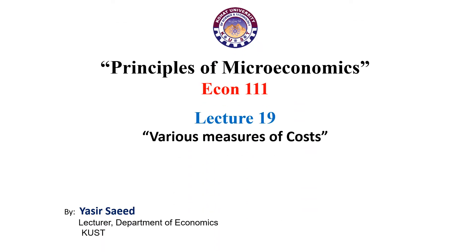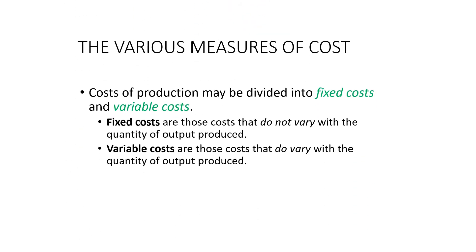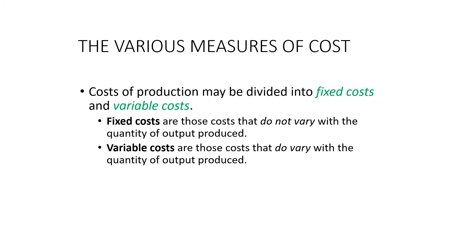Hello everyone and welcome to the class of principles of microeconomics, ECON 111. This is lecture number 19. In this lecture we are going to study the various measures of cost. We start with the cost of production, which can be divided into two types: fixed cost and variable cost.